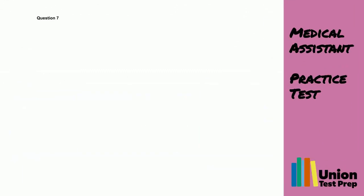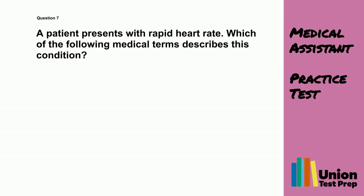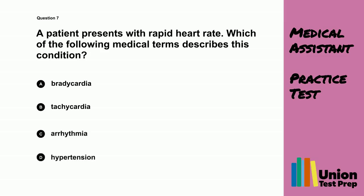Question 7. A patient presents with a rapid heart rate. Which of the following medical terms describes this condition? A. Bradycardia. B. Tachycardia. C. Arrhythmia. D. Hypertension.